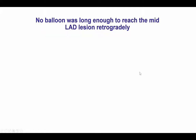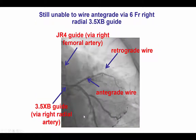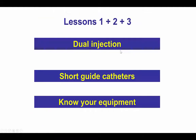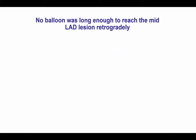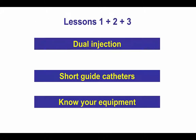Our initial plan was to get a retrograde balloon, balloon the mid-LAD, and then use another wire to wire the lesion antegrade. However, we soon found out that we could not advance a balloon all the way to the lesion. Therefore, there are multiple lessons already: one is that dual injection is key for CTO intervention; second, that short guide catheters and long microcatheters should be used when the retrograde approach is being planned.